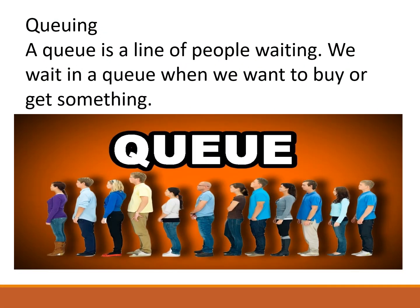The third rule is queuing. A queue is a line of people waiting. We wait in a queue when we want to buy or get something, like at a railway station, bus stop, or airport.